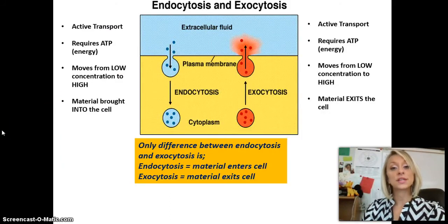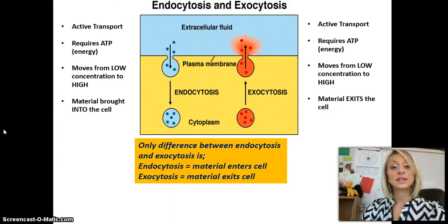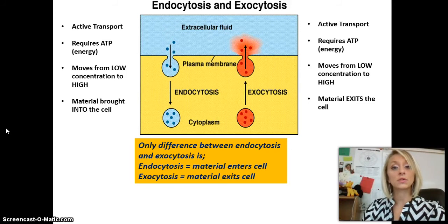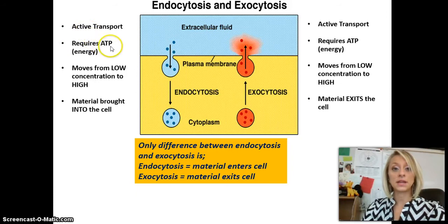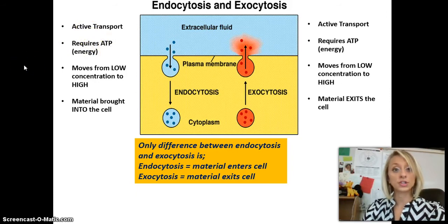Last, we have endocytosis and exocytosis. These are different from the three examples we've talked about because these are an example of active transport. Active transport needs ATP — just remember that active starts with A, and it needs ATP. It requires energy in order for it to function.